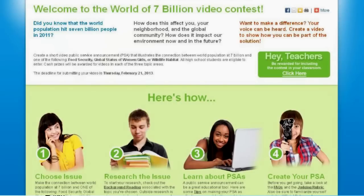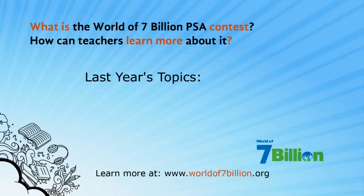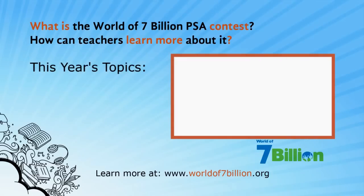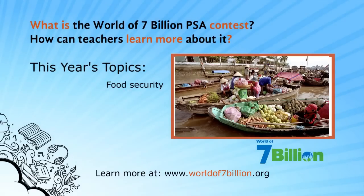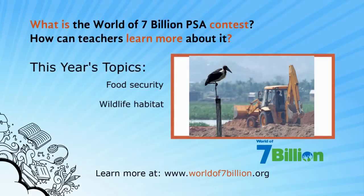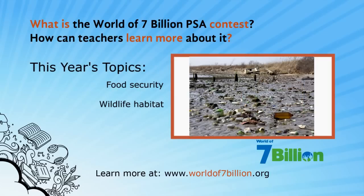The last time around, when Anthony's students entered, the top topics students chose were water and energy to show how they're impacted by world population growth. This time, we have three topic areas. First, food security — we're at 7 billion now with about a billion people who don't have enough to eat, and our population is expected to grow to 9 billion by mid-century. Second, impacts on wildlife habitat — as population grows, people need more homes, businesses, and roads, which encroaches on habitat for wildlife.